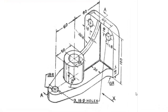Hi viewers, today I will explain how to create this model in SOLIDWORKS. This model has four total parts: one base part, one side part, one cylinder part, and one supporting part. To begin, we will first create the side part.